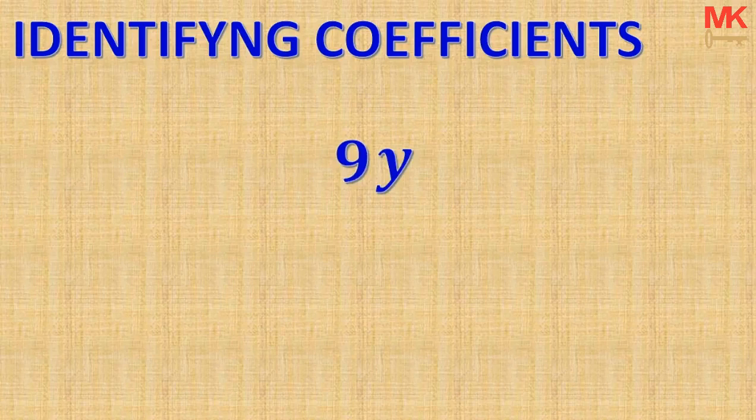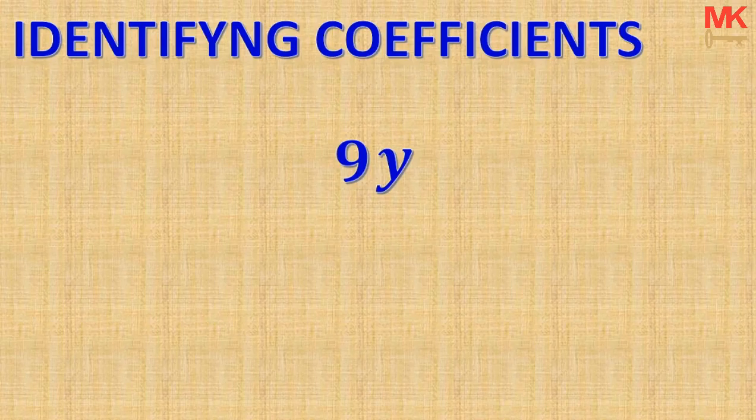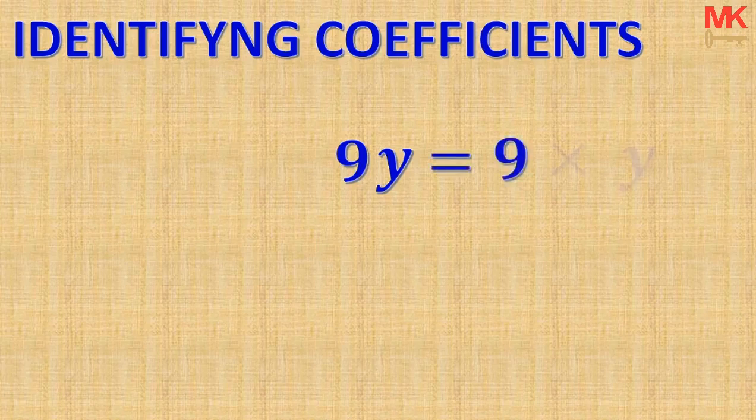You might be wondering: where is the operation between the 9 and the Y? Whenever a number is written directly before a letter without any operation, there is a multiplication operation between them, though it is invisible. So the term 9Y can be written again as 9 times Y.